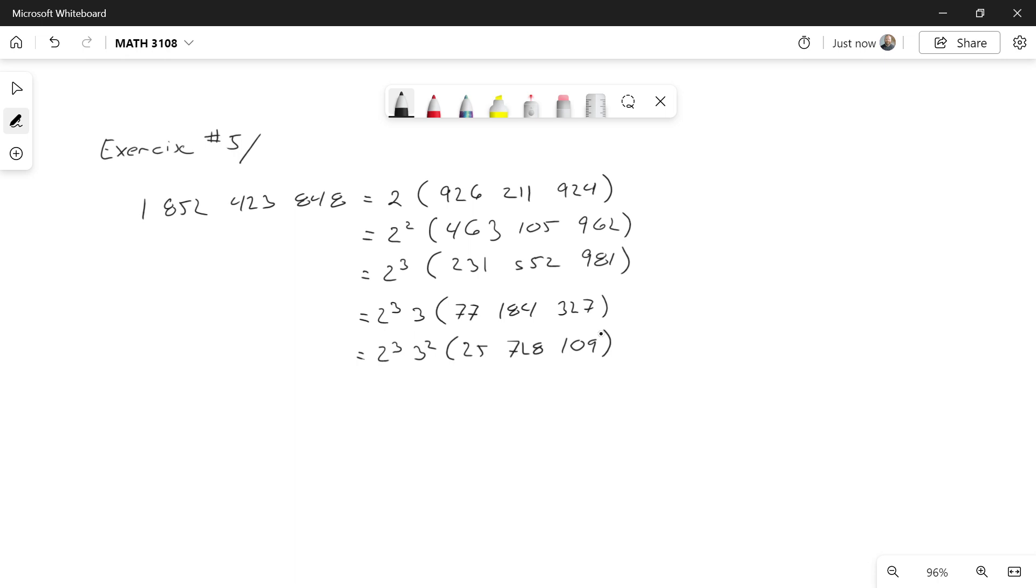At this point in time, I try 3 again. It's not going to work. Then I could try other primes. And I'm going to notice that the next prime I could take out is going to be 11. So again, 2 to the 3, 3 to the 2, 11. And I'm left with 2,338,919.